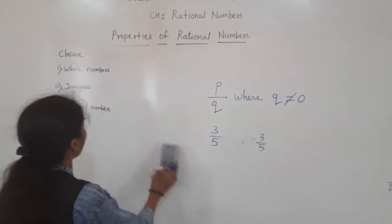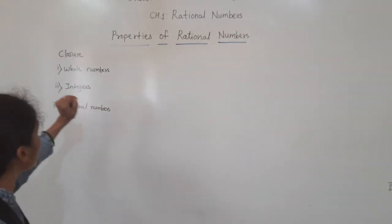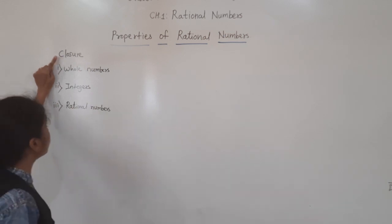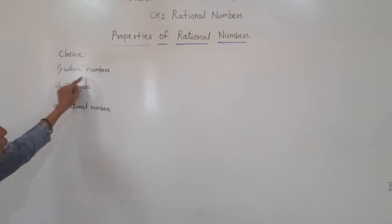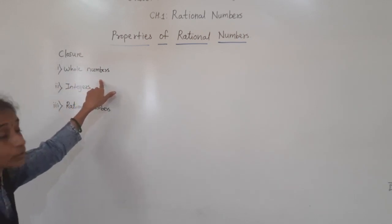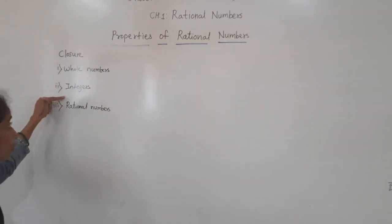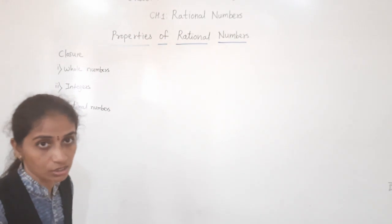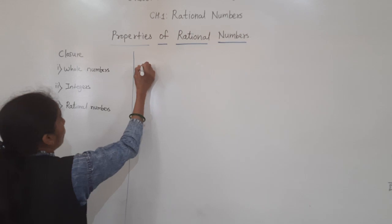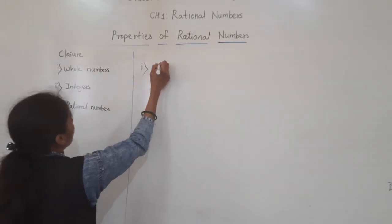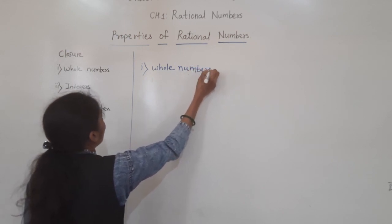Now we will move towards the properties of rational numbers. The first property we are going to learn today is closure property. In closure property, we will first learn closure property for whole numbers, then for integers, and then for rational numbers.